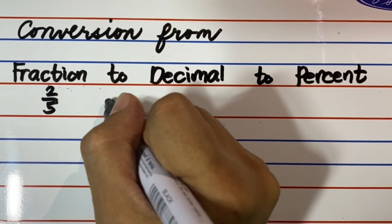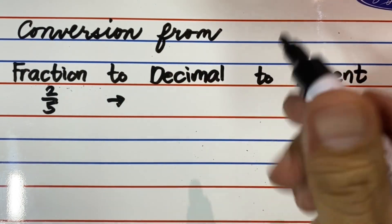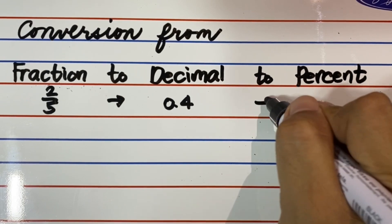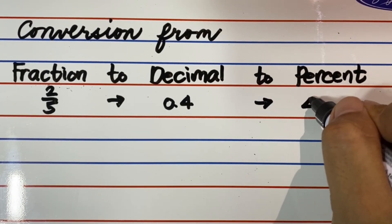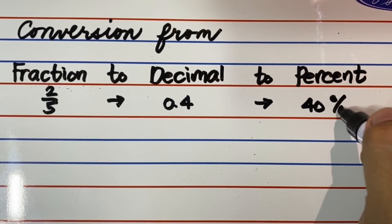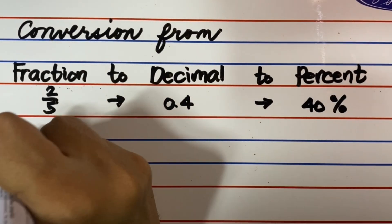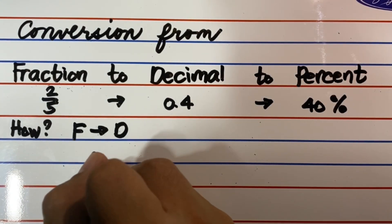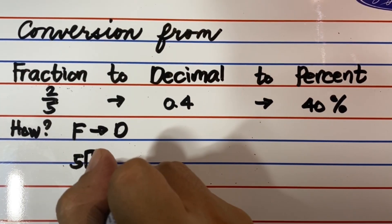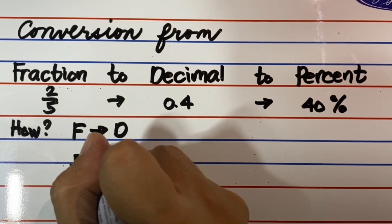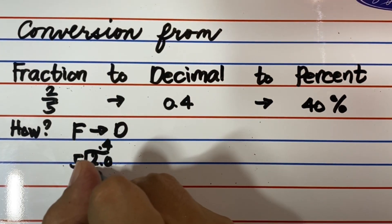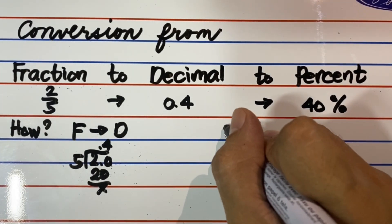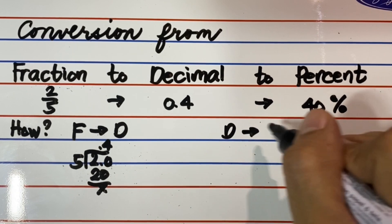2 over 5 is read in fraction as two-fifths. 0.4 is read in decimal as four-tenths. 40%. How do we convert 2 over 5 or two-fifths to decimal? We simply divide the numerator, which is two, by the denominator, which is five. Watch and learn. 2 over 5 or two-fifths becomes 0.4 or four-tenths.